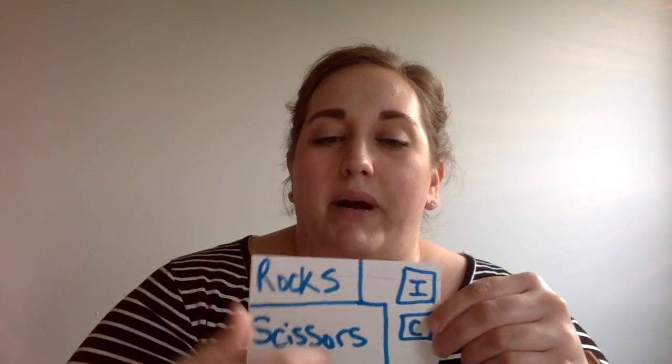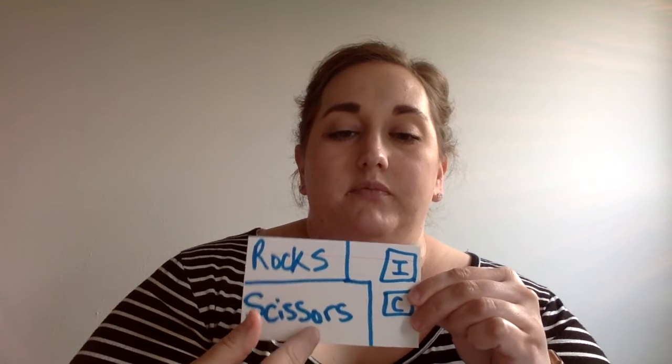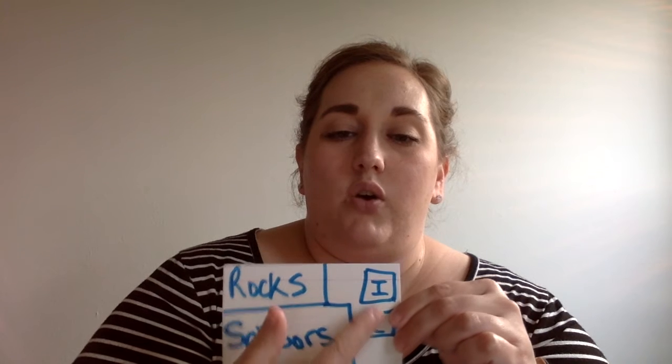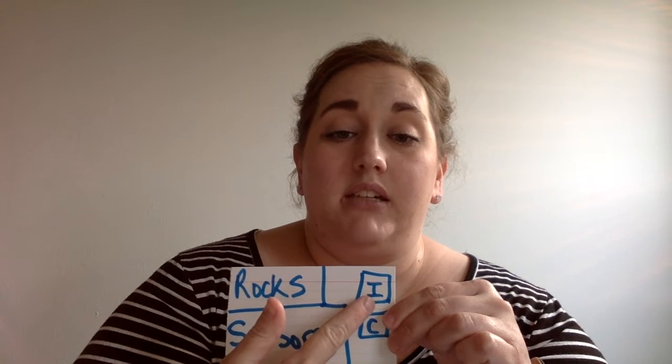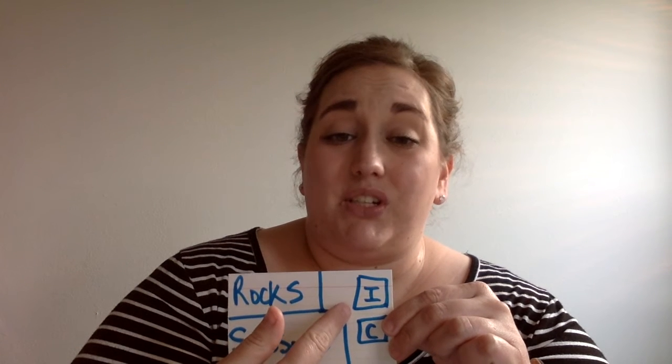So on this test, there's one question that is multiple parts, and it has seven things that you get to label. It's going to look like this: there are boxes with words in them, and you're going to label each of them as a conductor or an insulator. We haven't talked about conductors or insulators yet, so you're just going to do the best you can.